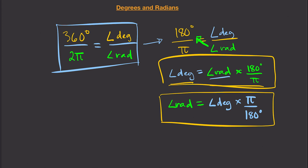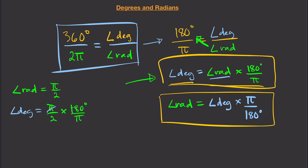For example, if my angle in radians is π over 2, how do I convert that into degrees? I use the formula: angle in degrees equals (π/2) times (180/π). The π's cancel out, and 180 divided by 2 gives me 90 degrees. So π/2 radians equals 90 degrees.